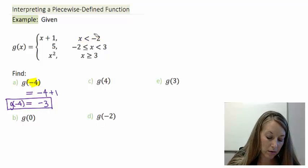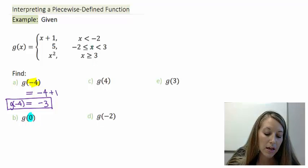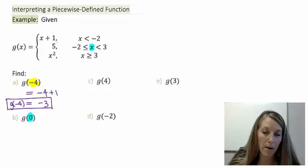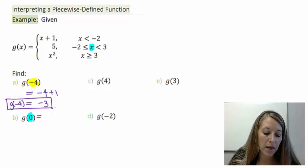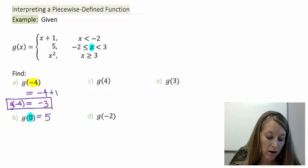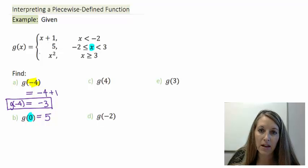In part B, we have g of 0. The first step is to figure out which interval it fits into. 0 is between negative 2 and 3, so I'm going to substitute it into the second piece. It's almost too easy — it may seem like a trick question. The second piece is given by 5, and there's no x value, which means the answer is guaranteed to be 5. Any x value between negative 2 and 3 gives an output of 5.